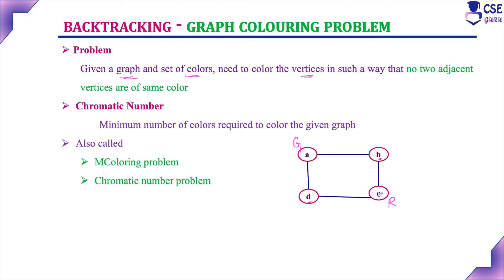This is the graph coloring problem, and the important concept here is the chromatic number. The chromatic number is the minimum number of colors required to color the given graph such that no two adjacent vertices share the same color. This graph coloring problem is otherwise called the chromatic number problem or the M-coloring problem, where M represents the possible number of colors required.